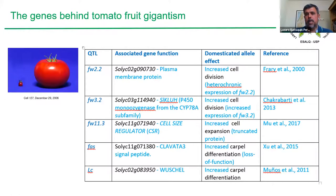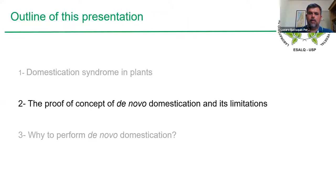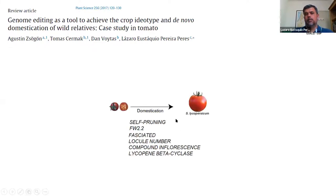This brings us to the second part of my talk: the concept of novel domestication. This depends on the idea that most domestication, at least for tomato, is based on monogenic traits. I also want to elaborate on the limitations of novel domestication. It's very interesting that most of the variation occurring during tomato domestication — from Solanum pimpinellifolium, the ancestor of tomato, to cultivated tomato — most of those traits are monogenic.